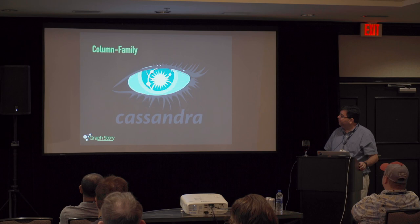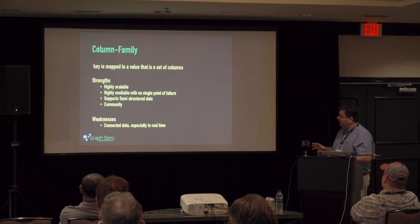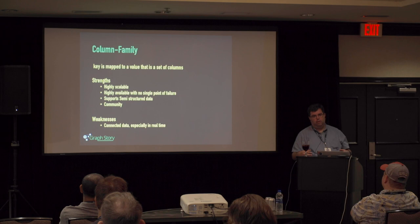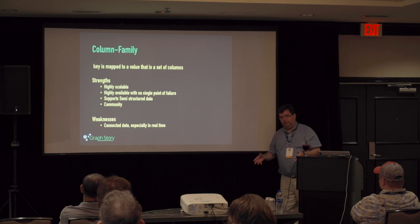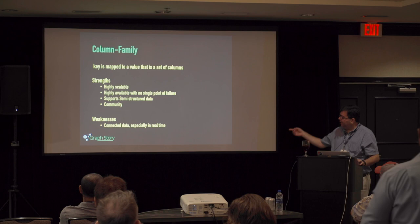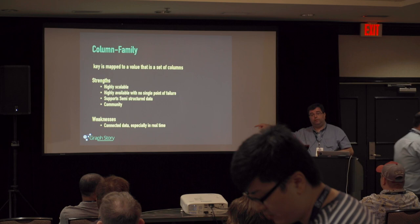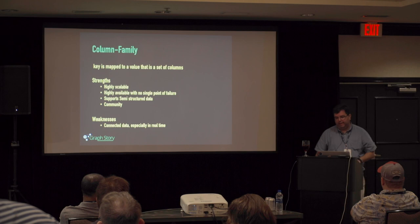Column family — Cassandra, essentially supported by Facebook — is a key mapped to a value that is a set of columns. It's a pretty complicated structure but really good at being scalable with no single point of failure. It supports semi-structured data, and there's a great community behind it. Connected data is the challenge, especially in real time — it's great for rear-view mirror analysis when you have a bunch of static data and want to do big heavy analysis.